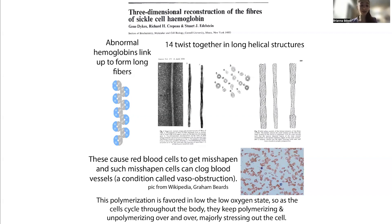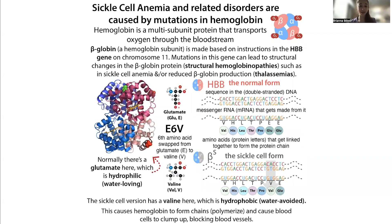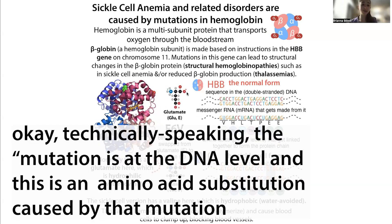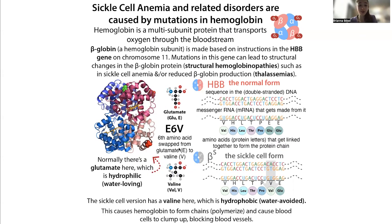Sickle cell anemia is a serious and life-threatening disease that is caused by this mutation from a glutamate to a valine. This really shows you the power of a single hydrophobic amino acid — a single valine is able to cause all these things because of its hydrophobicity.